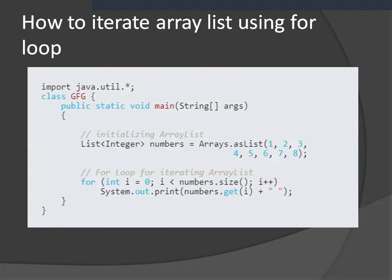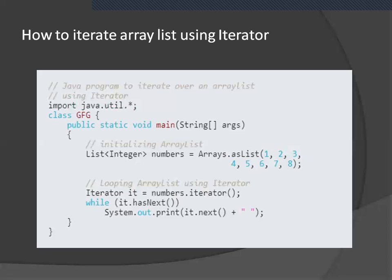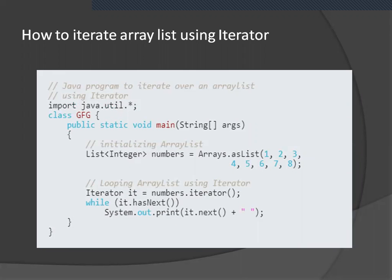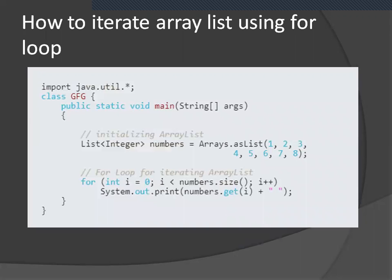How to iterate an ArrayList using a for loop — this is one question. They can also ask how to iterate an ArrayList using an iterator. For the for loop approach, you create a class with a public static void main method, initialize the ArrayList from one to eight, and then use a for loop to iterate it. Java is the programming language here.